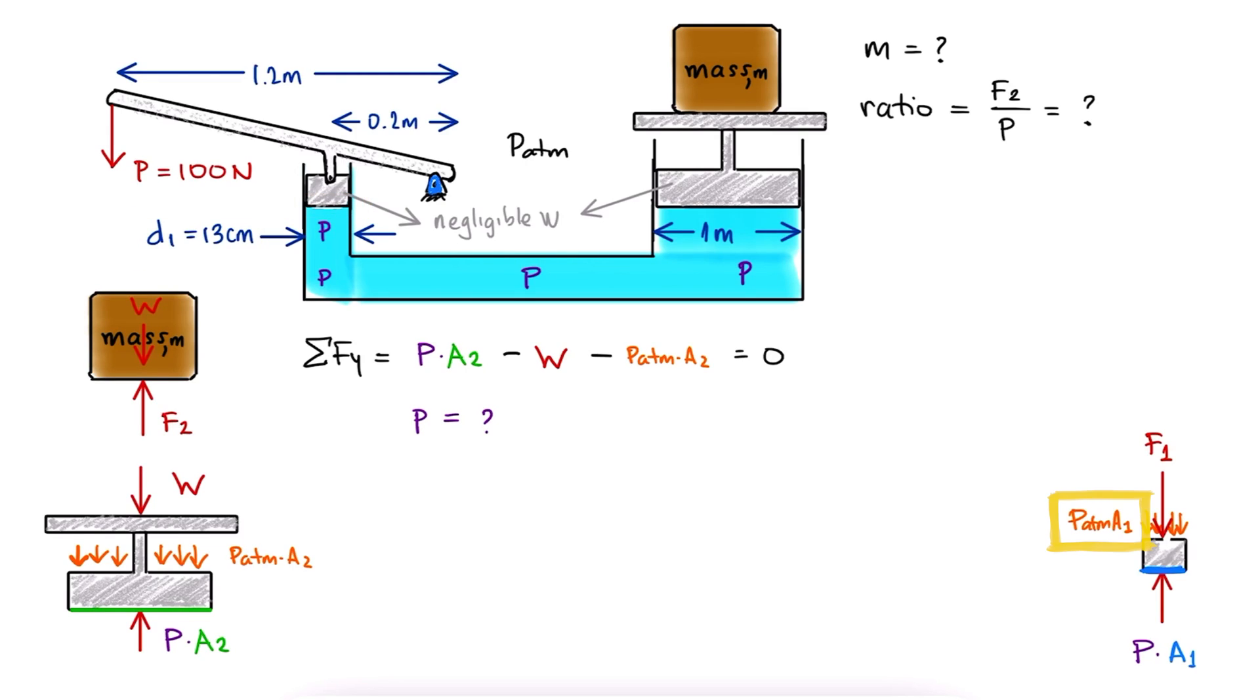Again, we can add the force caused by the atmospheric pressure going down, but we'll see soon enough that it would cancel out with the atmospheric pressure force on the other piston. The force that the lever causes on the piston can be easily found with a free body diagram of the lever itself.